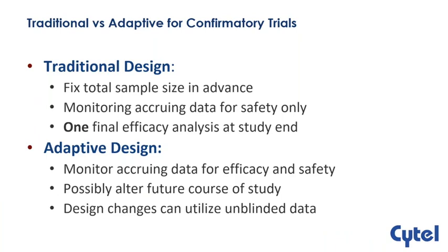We're all aware of traditional designs where you fix the total sample size in advance and monitor accruing data for safety only, with one final efficacy analysis. This poses risks if a treatment is not as efficacious as you think, potentially harmful, or conversely very efficacious in a rare disease setting. With an adaptive design, you monitor accruing data for both efficacy and safety with possibilities for altering the future course of the study — alterations that must be pre-specified, utilizing unblinded data, which requires a data monitoring committee.